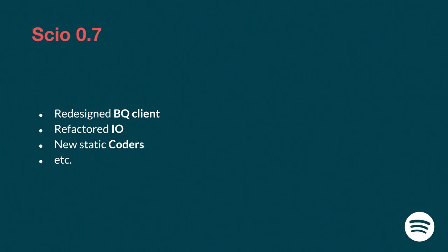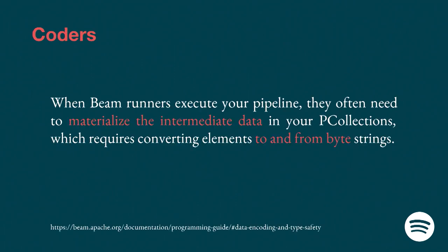The other biggest change we're making is introducing the concept of new coders. Coders are what you use in Beam when you need to move data between workers, which happens a lot. Anytime you're processing data and need to move it from one worker to another, you need to turn that data into an array of bytes — that's what coders do. They take your class instances, turn them to bytes, send them over the network, and then the other worker deserializes the bytes back to a class.